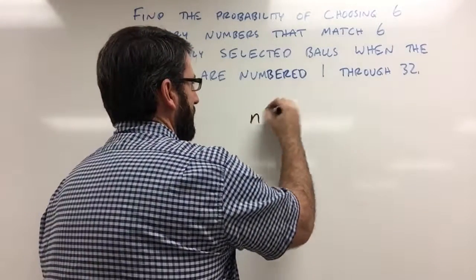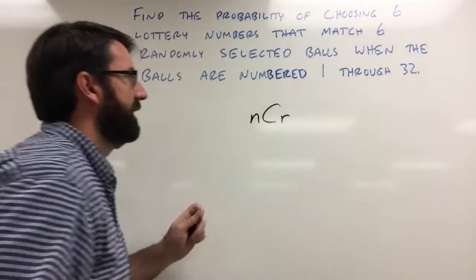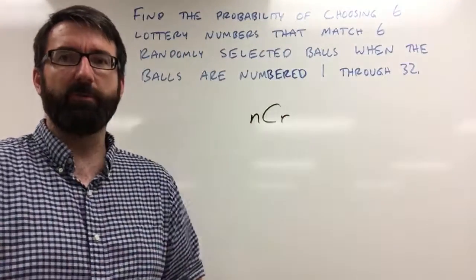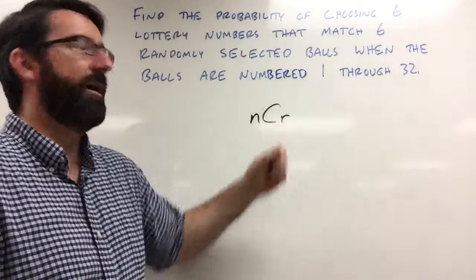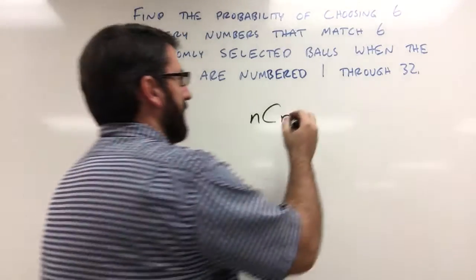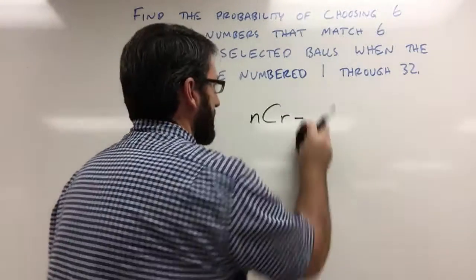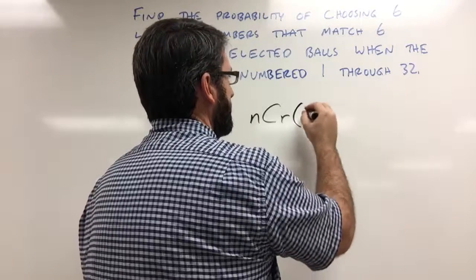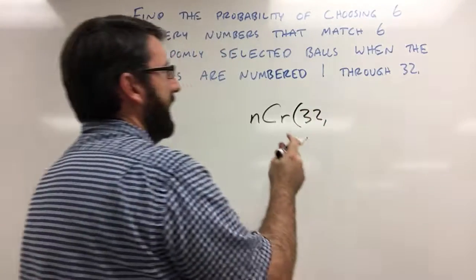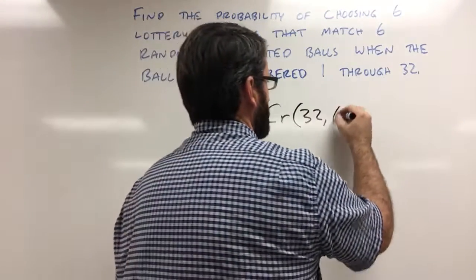So we're looking for n choose r, where n is the total number of balls that we can choose from and r is the number of balls that we're choosing. So in this case, the n is 32 and the r is going to be 6.